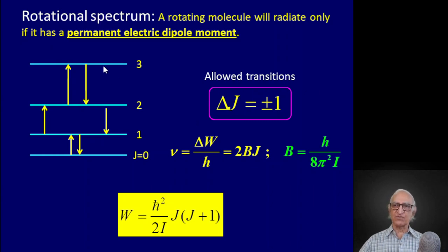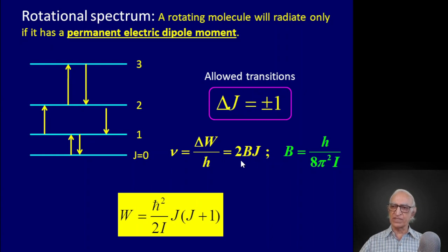When a molecule jumps from level j to j minus 1 (or up from j to j+1), the frequency of radiation emitted or absorbed is given by Bohr's condition: h-nu equals the energy level spacing delta-W between the two levels. The frequency emitted nu is given by the formula 2B times j, where B is shorthand for h divided by 8 pi squared I, and j can take values 0, 1, 2, 3, and so on. B comes from the factor h-bar squared equals h squared divided by 4 pi, so this factor becomes h divided by 8 pi squared I.